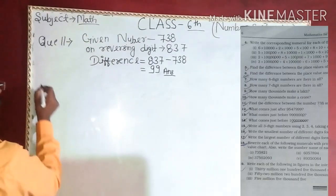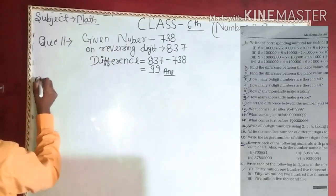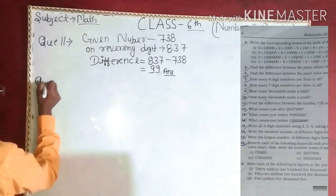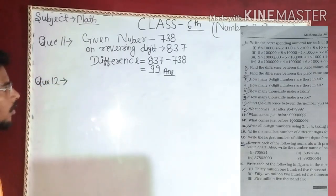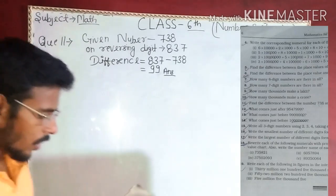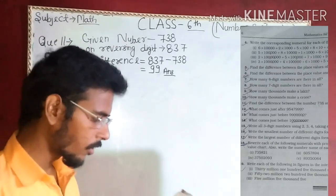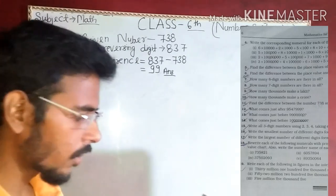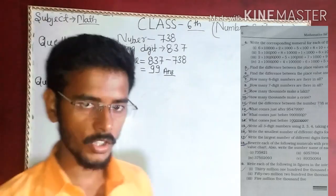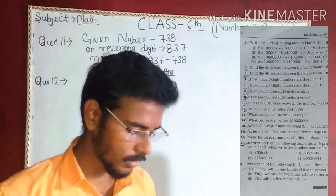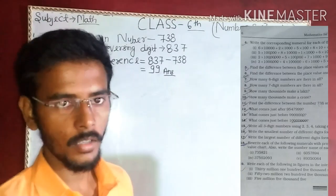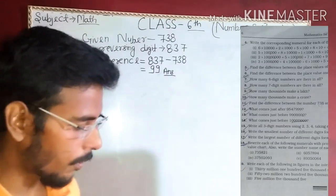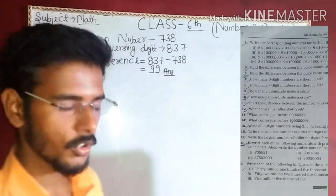Question number 12: What comes just after 9547 followed by blanks? What comes just after that number?